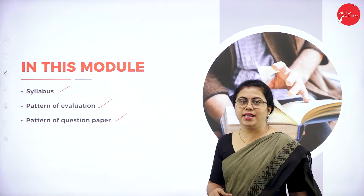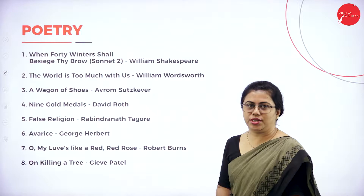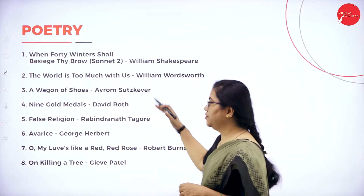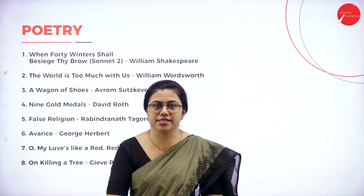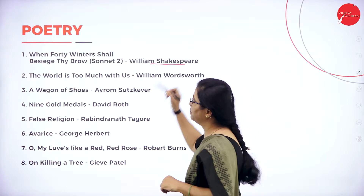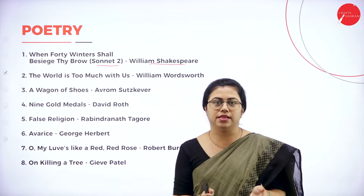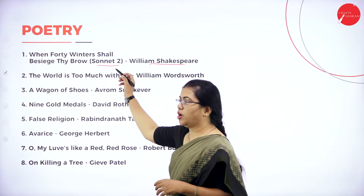The first thing is poetry. Poetry is a collection of poems. We have 8 poems prescribed for this semester. The first one is authored by William Shakespeare — it's a sonnet, specifically Sonnet Number 2. A sonnet is a poem that has 14 lines. Shakespeare was very well known for his sonnets, and one of the most famous is 'When Forty Winters Shall Besiege Thy Brow,' which you will be studying this semester.